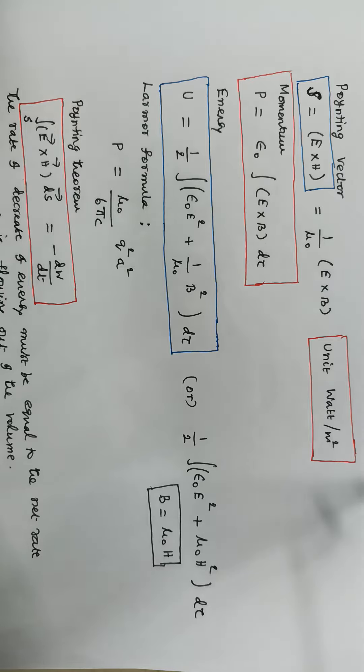H may be replaced by B by μ0 since B equals μ0 into H. Therefore, S equals 1 by μ0 into E cross B. The unit of pointing vector is Watt per meter square.